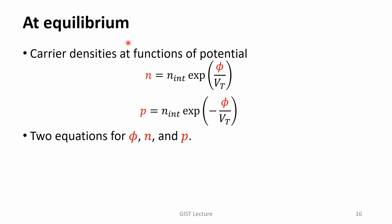At equilibrium, special relations can be used. Under Boltzmann statistics, and only at equilibrium, the carrier densities are exponentially dependent on the electrostatic potential. This is possible because the quasi-Fermi potentials are zero at equilibrium. By collecting Gauss's law and these two relations, we can prepare a set of coupled equations with three unknown variables, which is used to calculate the equilibrium solution.